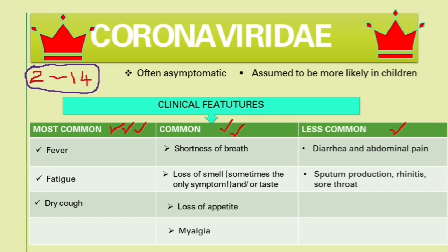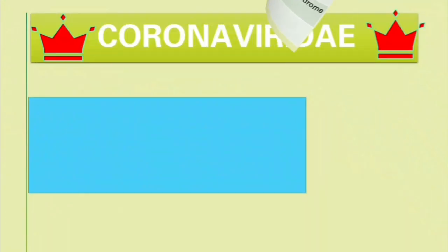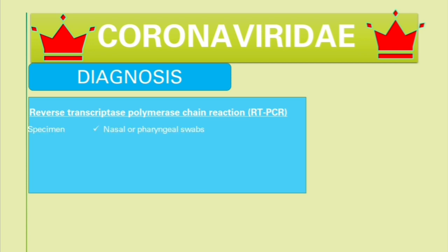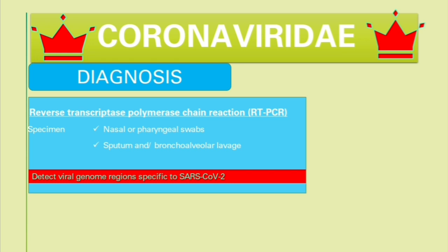In children who are infected or have recovered from coronavirus, they present with features of toxic shock syndrome and Kawasaki disease. For diagnosis, the best method is reverse transcriptase polymerase chain reaction. Specimens used are nasal or pharyngeal swabs, sputum, and/or bronchoalveolar lavage. This test detects the viral genome region specific for SARS-CoV-2, effectively detecting the RNA of this virus.